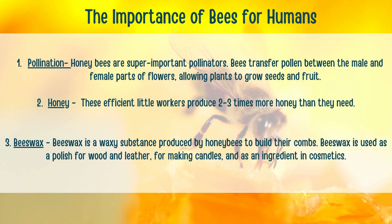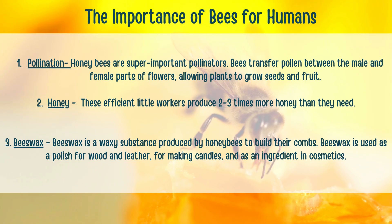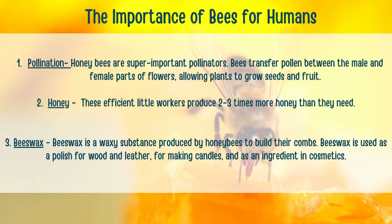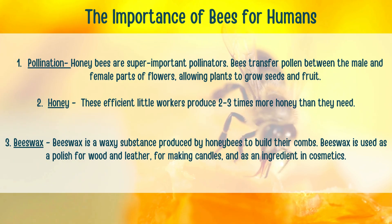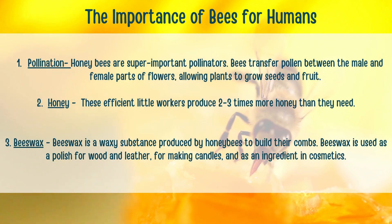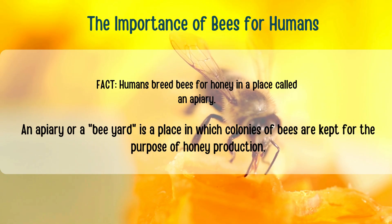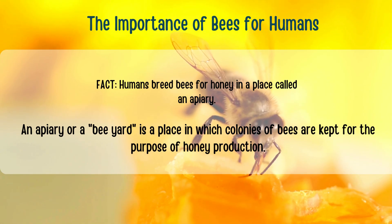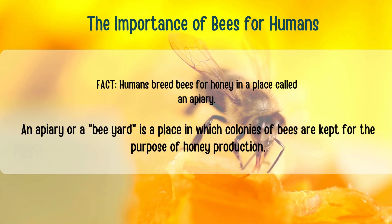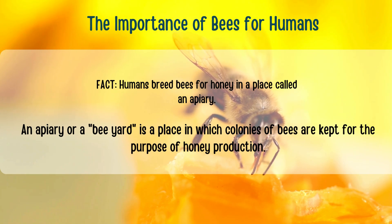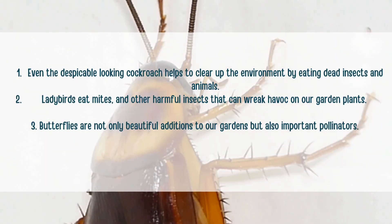So the bees help us in pollination, give us honey, and give us beeswax. There are other insects which may be important for humans, but bees are most often bred for honey in a place called the apiary. An apiary, or a bee yard, is a place where bees are kept for honey.